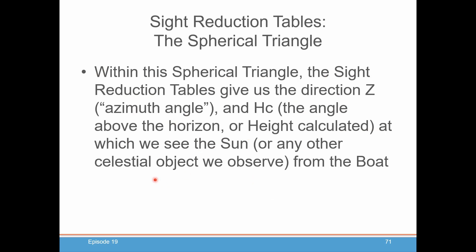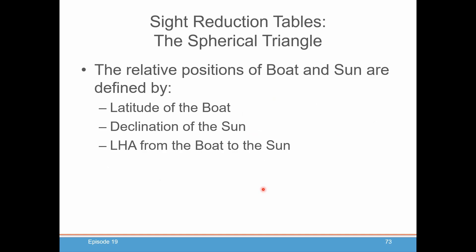And again, what does a site reduction table do for us? What they do is they solve that triangle for the azimuth angle, called Z, and the height above the horizon from where you are, called height calculated. And again, this is all prefigured out for you. You don't really have to think about it. This is just to introduce you to what the site reduction tables are doing for you and why they need that spherical triangle to figure it out. You just give it the latitude, declination, LHA, site reduction tables figure everything else out for you.